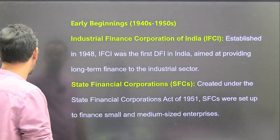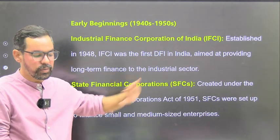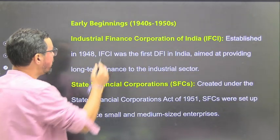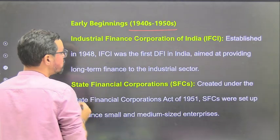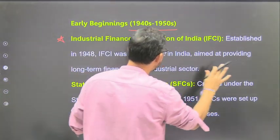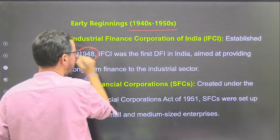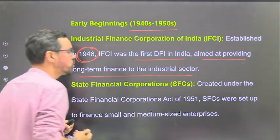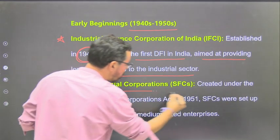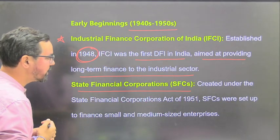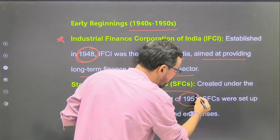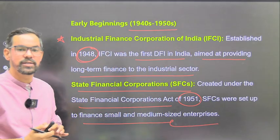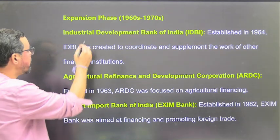Looking at the historical background: in the early phase, 1940s and 1950s, the Industrial Finance Corporation of India was the first DFI in India, established in 1948, aimed at providing long-term finance to the industrial sector. Then State Financial Corporations were created under the State Financial Corporations Act 1951. SFCs were set up to finance small and medium size enterprises in different locations of the country. Then in the expansion phase, 1960s to 1970s, IDBI Bank was established in 1964 to coordinate and supplement the work of financial institutions and provide finance to industries.